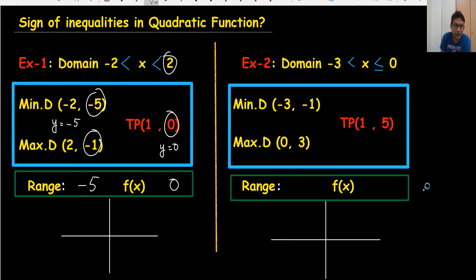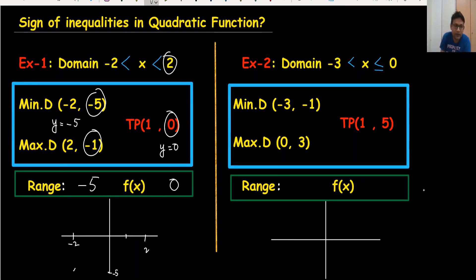You can understand this by drawing a little sketch. The turning point is at (1, 0). The point at x equals minus two gives minus five, so that's coming here. And the turning point (1, 0) is here, with the axis of symmetry at the turning point.